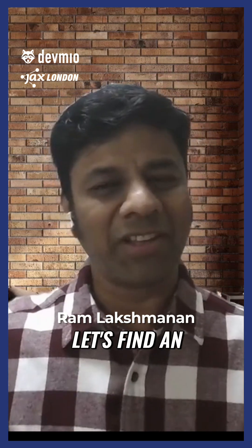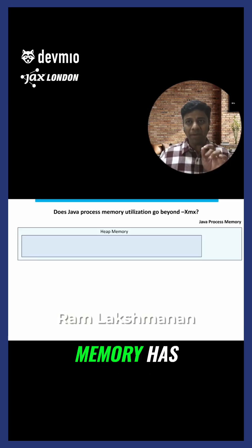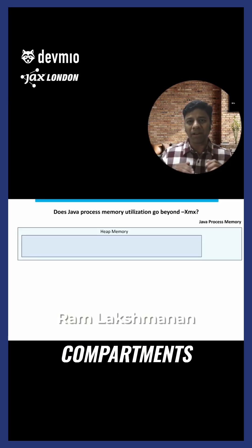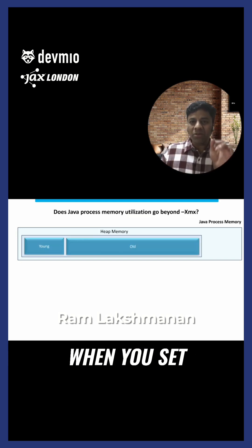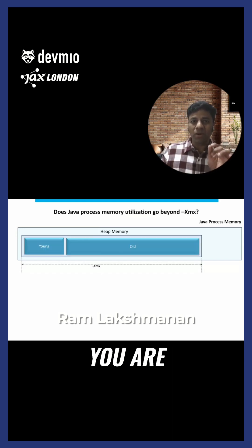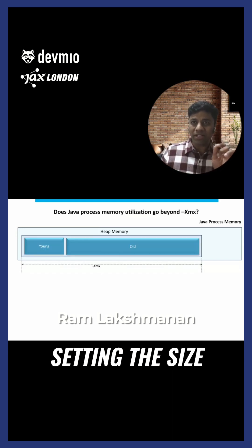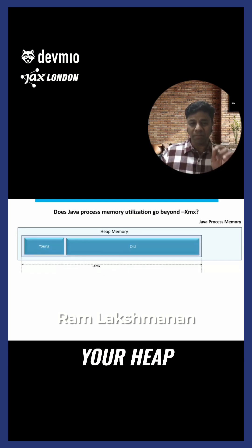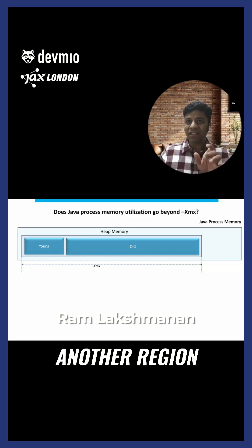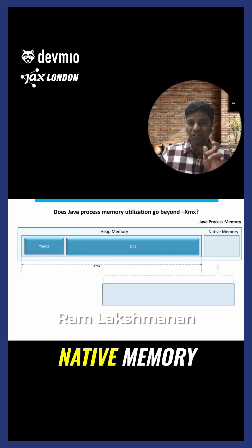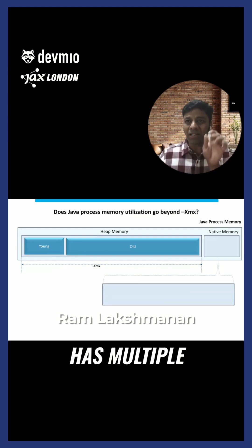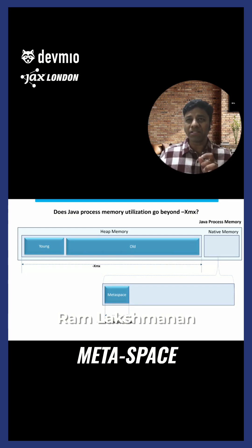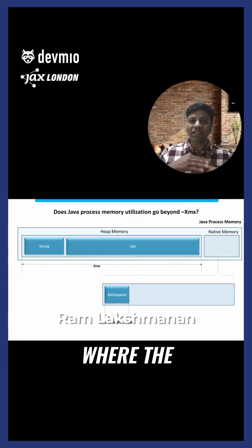Java memory has internal compartments. The primary compartment is Java heap memory — when you set XMX, you are actually setting the size of your heap memory. After that, there is another region called native memory, and this native memory has multiple compartments. There is a metaspace region where class definitions and meta definitions are stored.